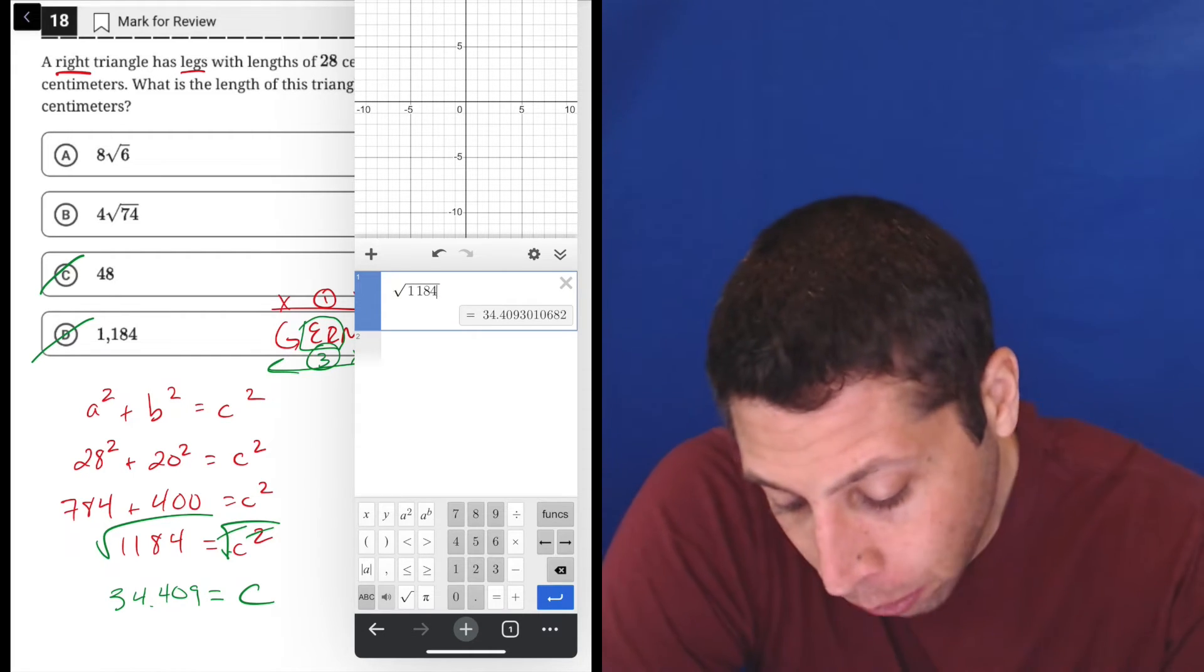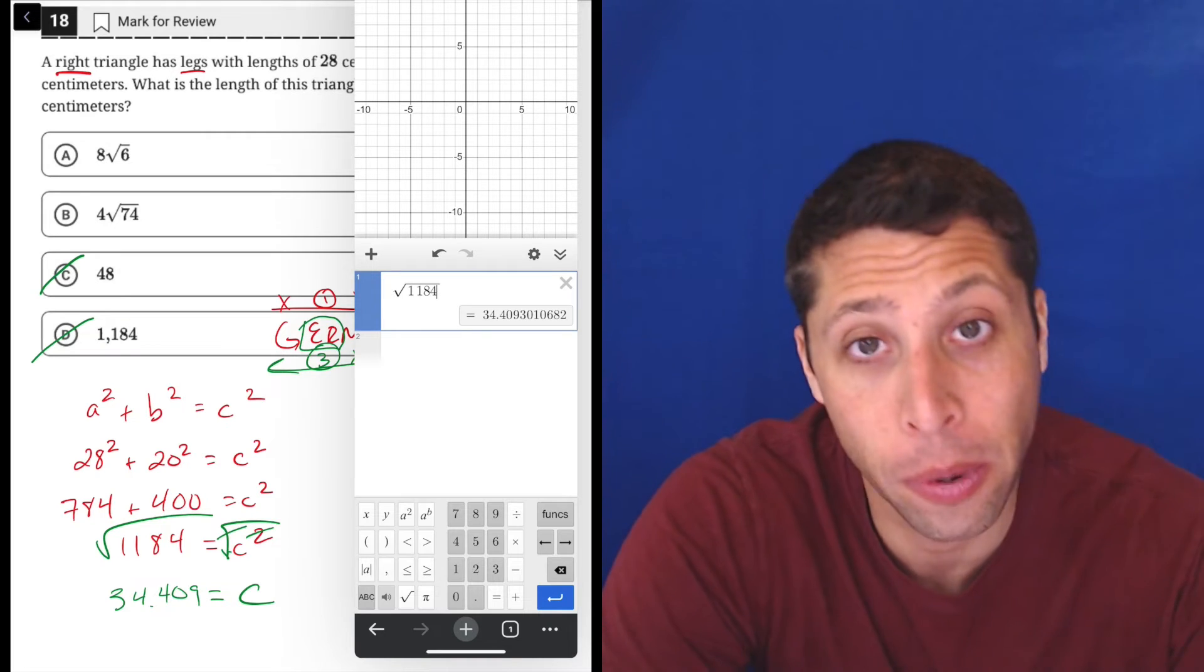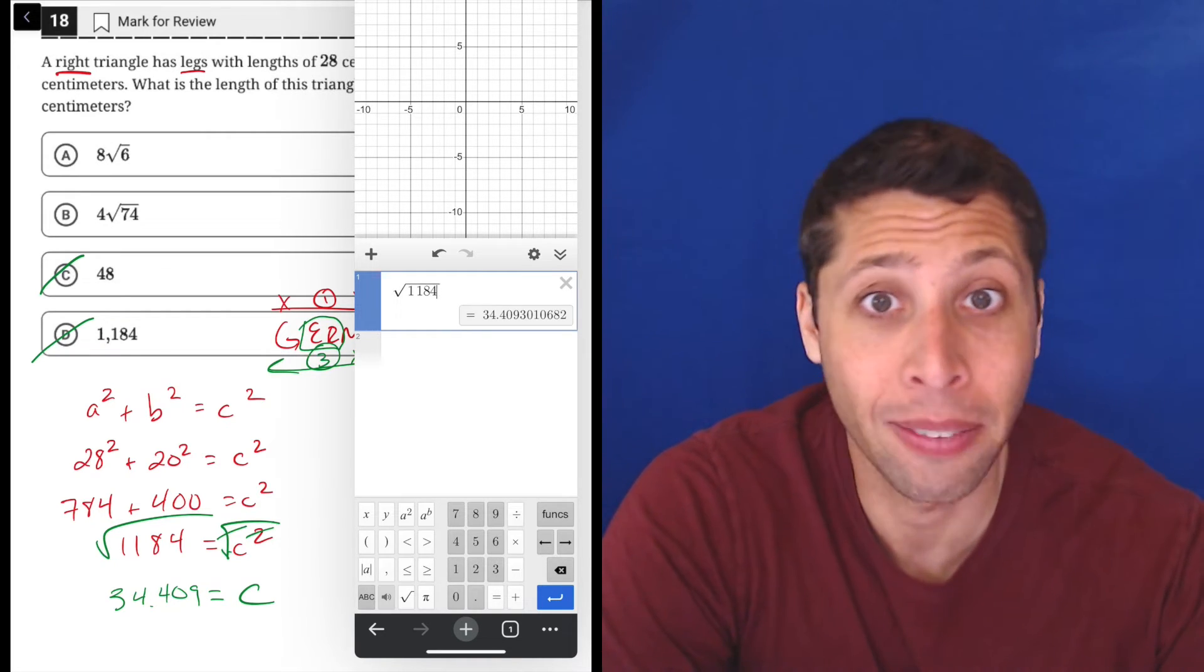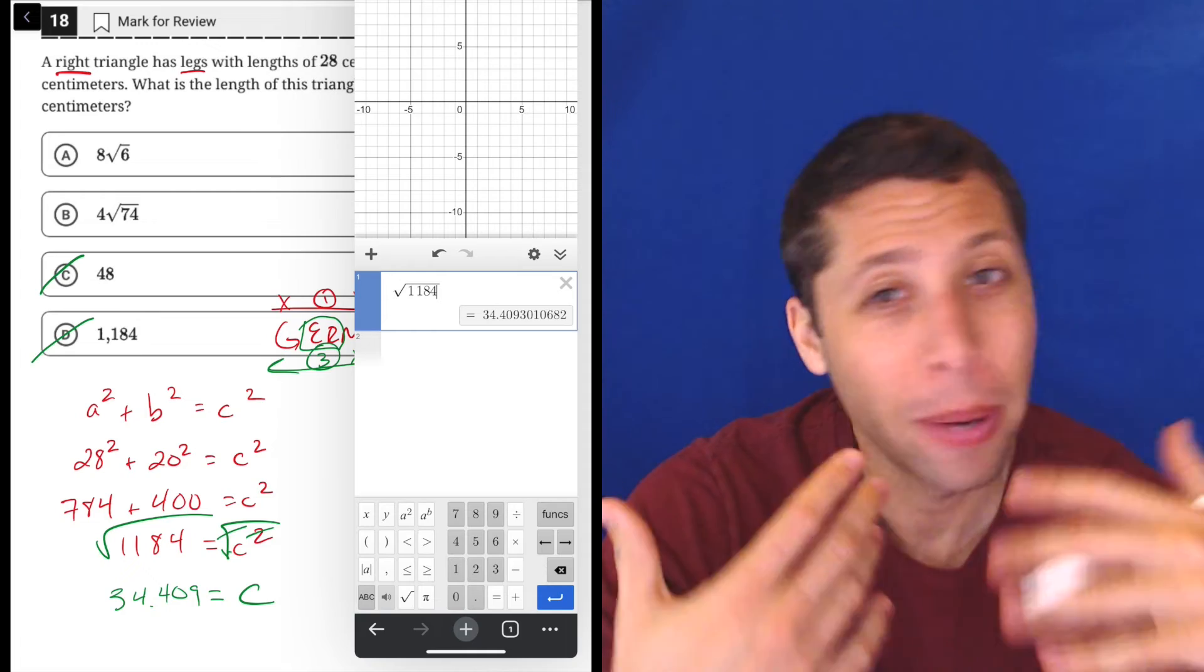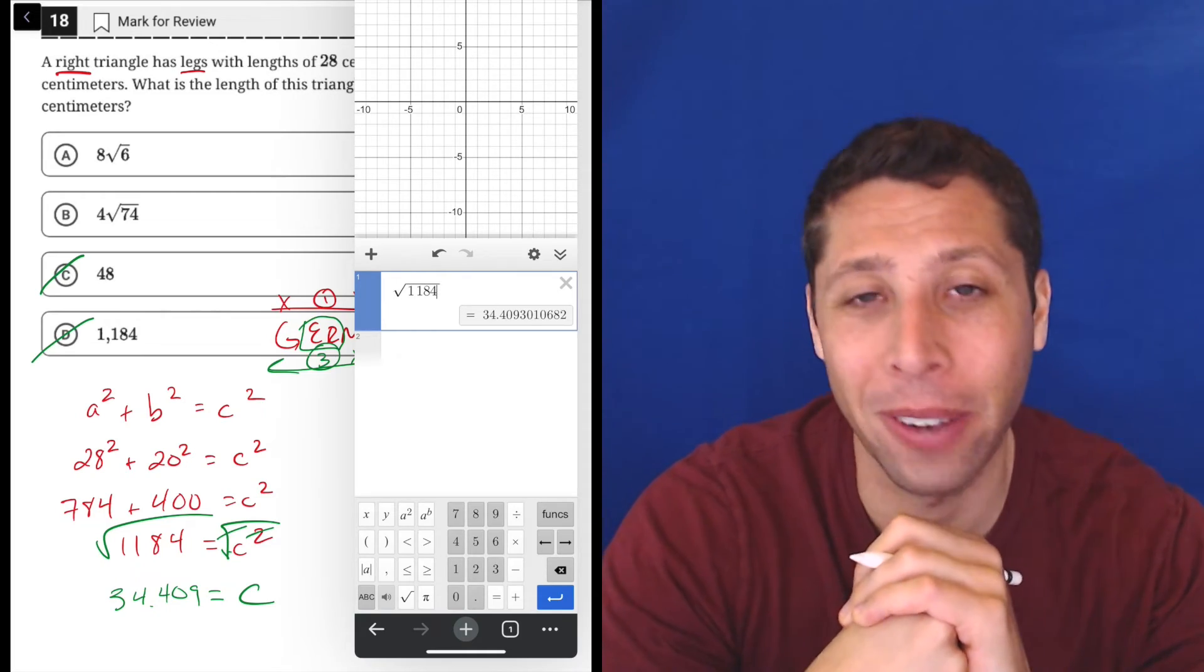But now like, how are we going to know eight root six, four root 74? Well, we could do this a much more kind of algebraic way and simplify the radical, basically finding perfect squares and pulling things out. But it's kind of a pain.